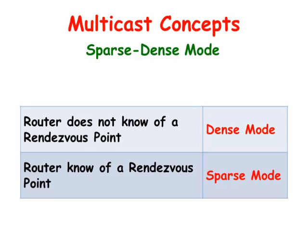When a router's interface is in Sparse Dense Mode, the interface will default to the behavior of dense mode. If the router learns of a rendezvous point, it will switch to sparse mode and start using the rendezvous point. This mode is useful when you are transitioning the network from one mode to another.